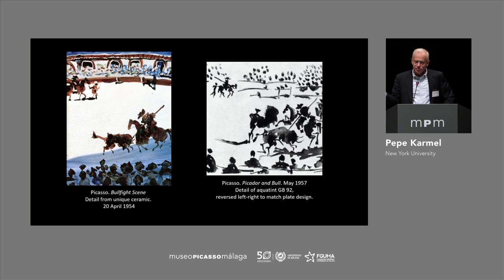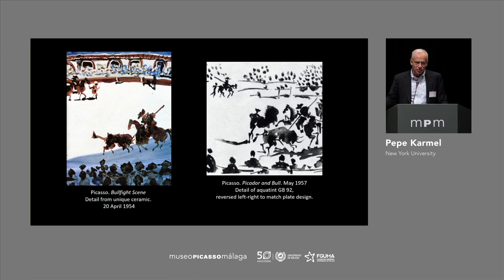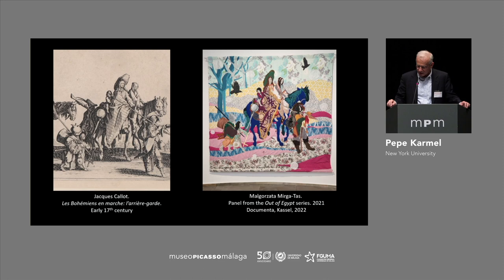Picasso knew he'd achieved something wonderful with these compositions and came back to them, so the relationship of the picador and the bull gets repeated in a drawing from 1957 and then again in an aquatint from a year or so later. These things look very casual, but they're not. Picasso looked very hard at his own work, and when he saw something he was excited about, he came back to it over and over. So to recap: I've been talking about Picasso's engagement with textiles and patterns, his interest in ceramics as volumes, and his interest in ceramics as a version of painting. Now I want to turn to how this works in contemporary art.